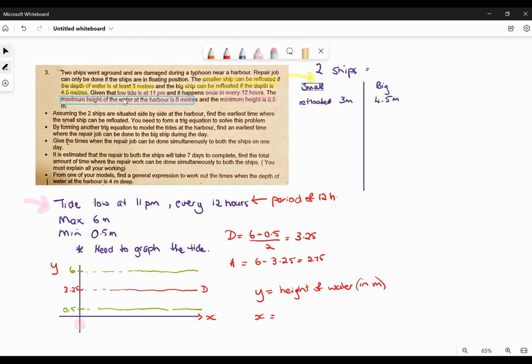You're told that the maximum height of the water is 6 metres, so we've got max of 6. Minimum height is 0.5, so we've got a minimum of 0.5. You need to graph the tide. This means that y is going to be the height of the water in metres.